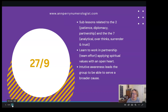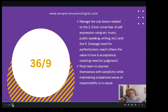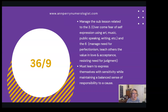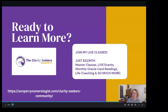The 36/9 has yet another set of sub-lessons. The three involves overcoming a fear of self-expression, perhaps through art, music, poetry, writing, or public speaking. The six relates to managing perfectionism, dropping that bar a little, teaching others the value of love and acceptance, and resisting judgment. These people need to learn to express themselves with sensitivity while maintaining a balanced sense of responsibility to whatever cause they're drawn to.